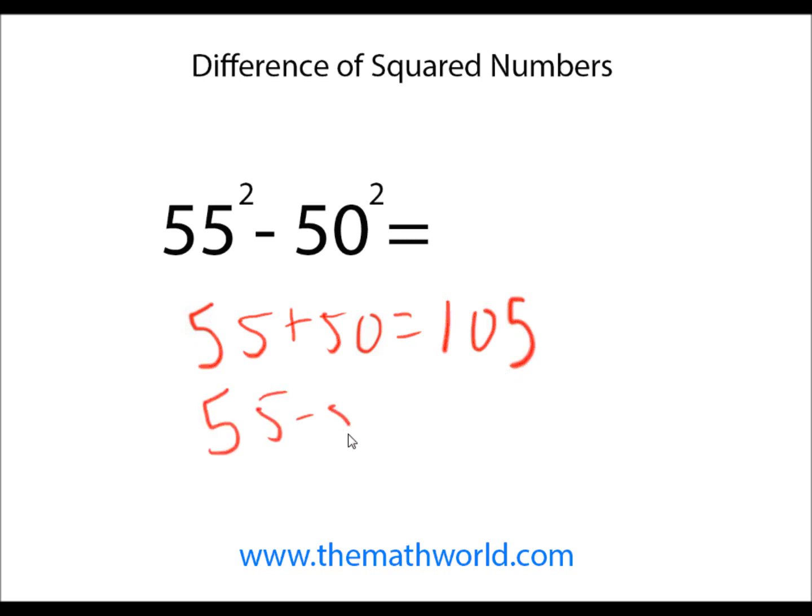We'll multiply both of these numbers. 105 times 5, and we're going to get 525.